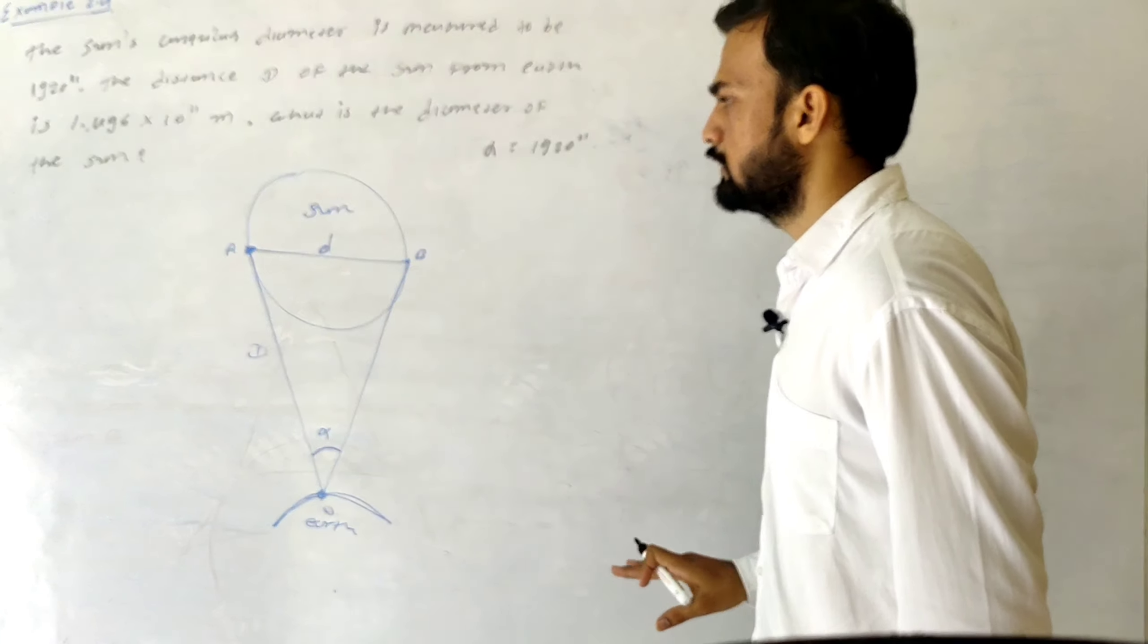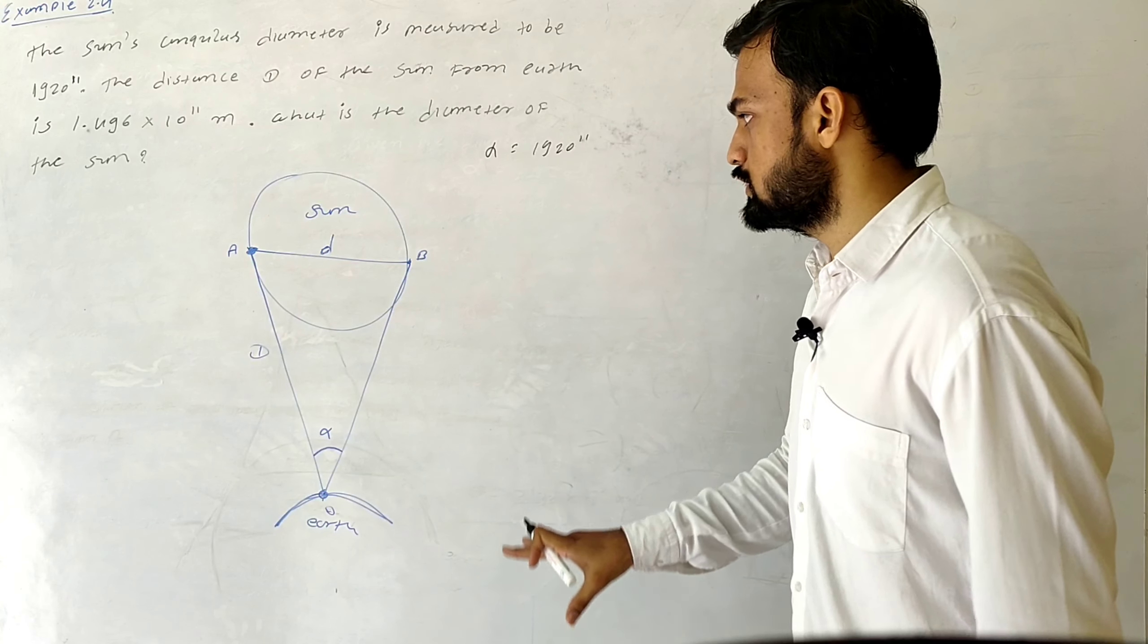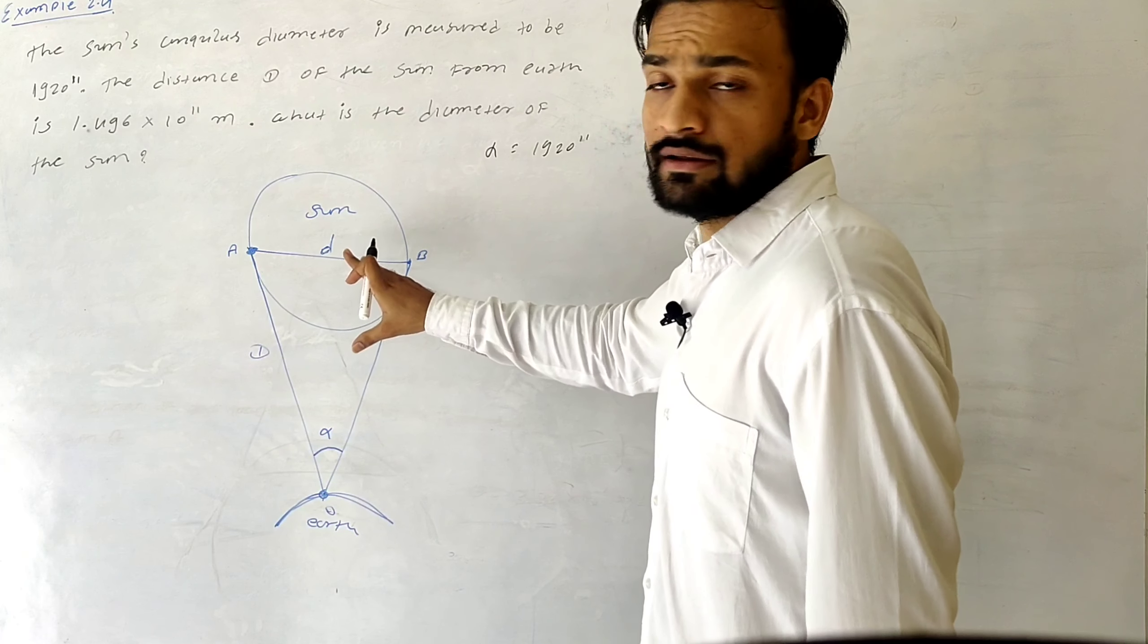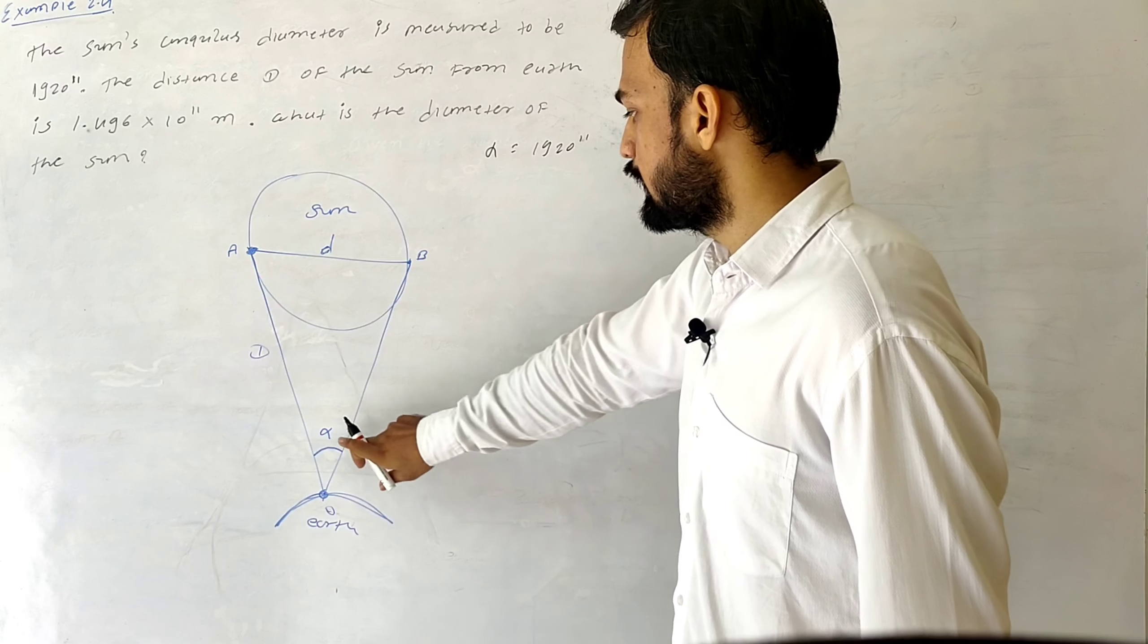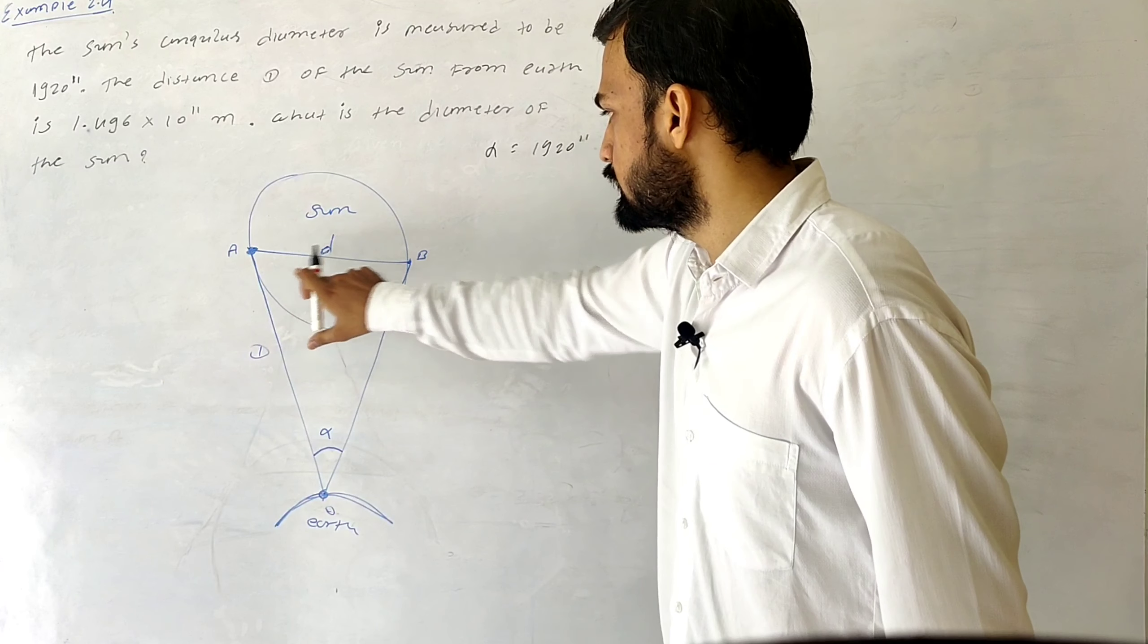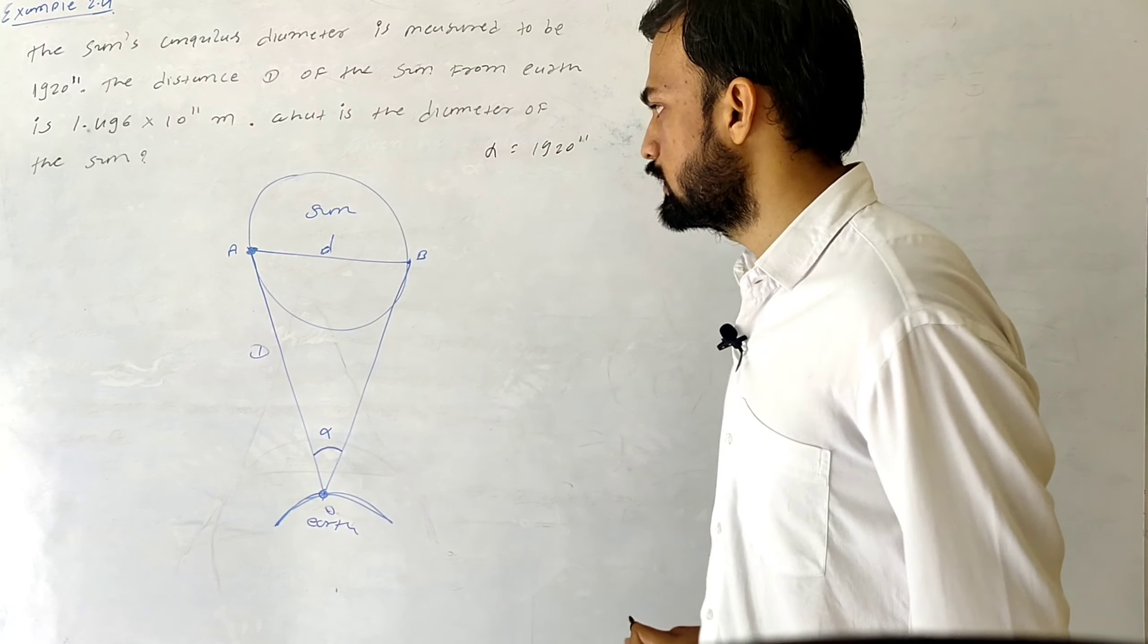In the equation of plane angle equals arc upon radius, we have the angle as well as the radius. We have to find the length of the arc, which is small d.